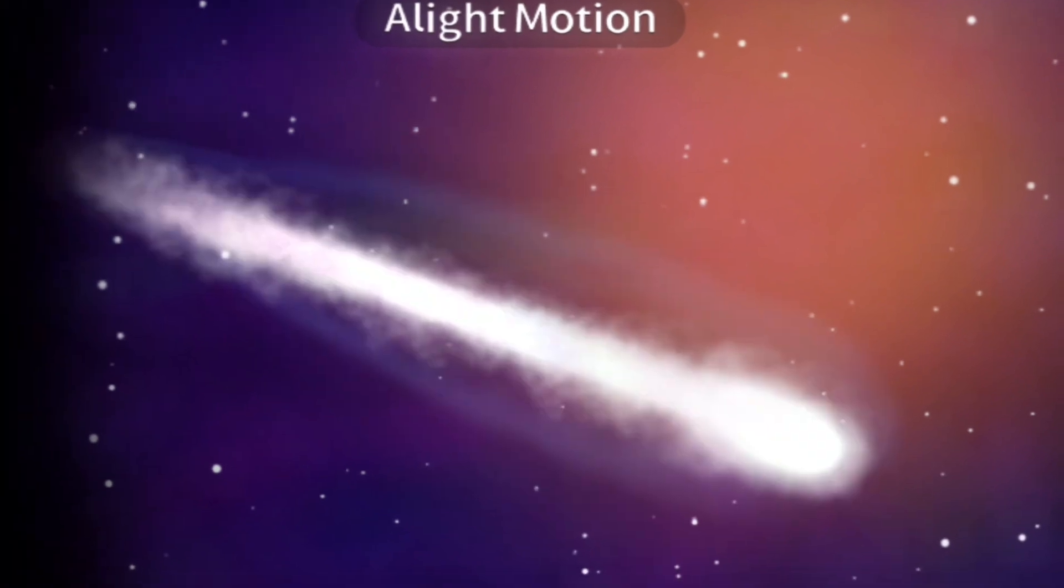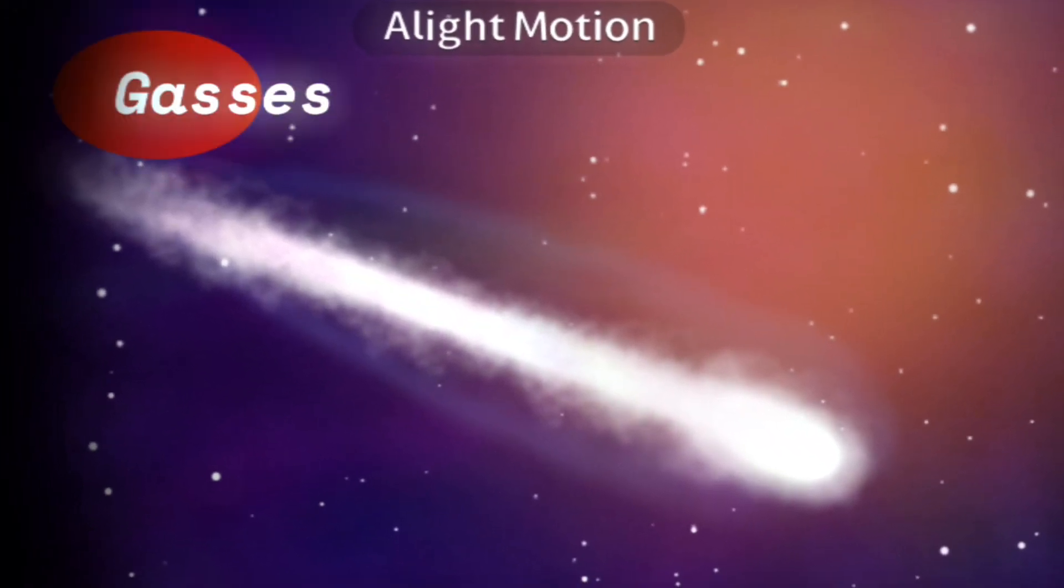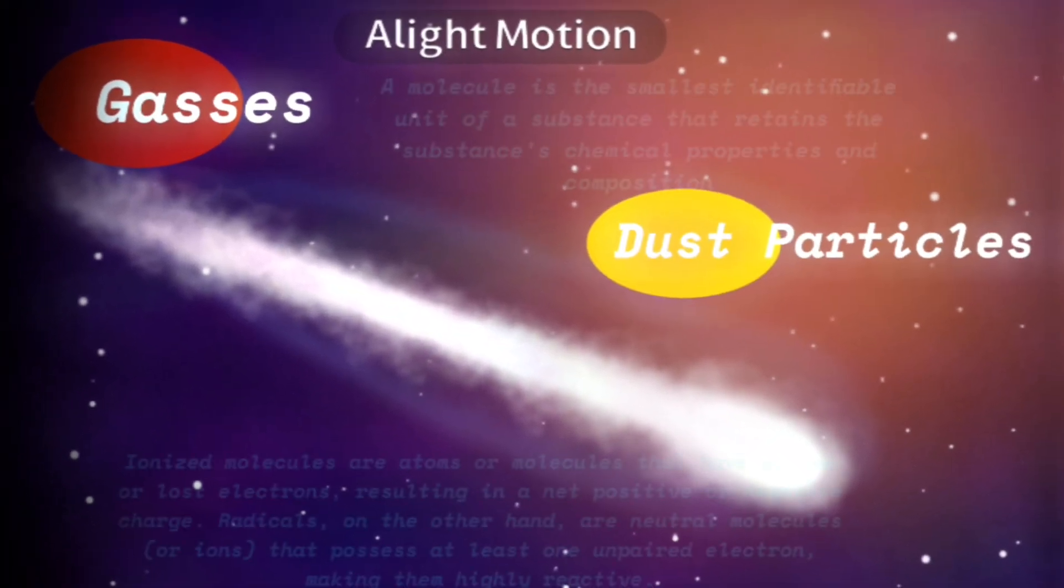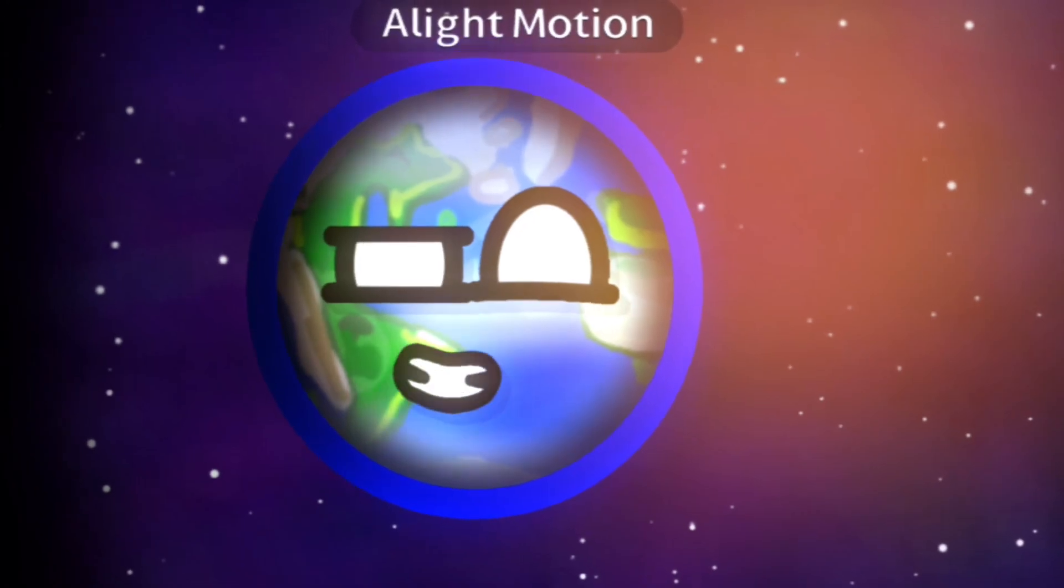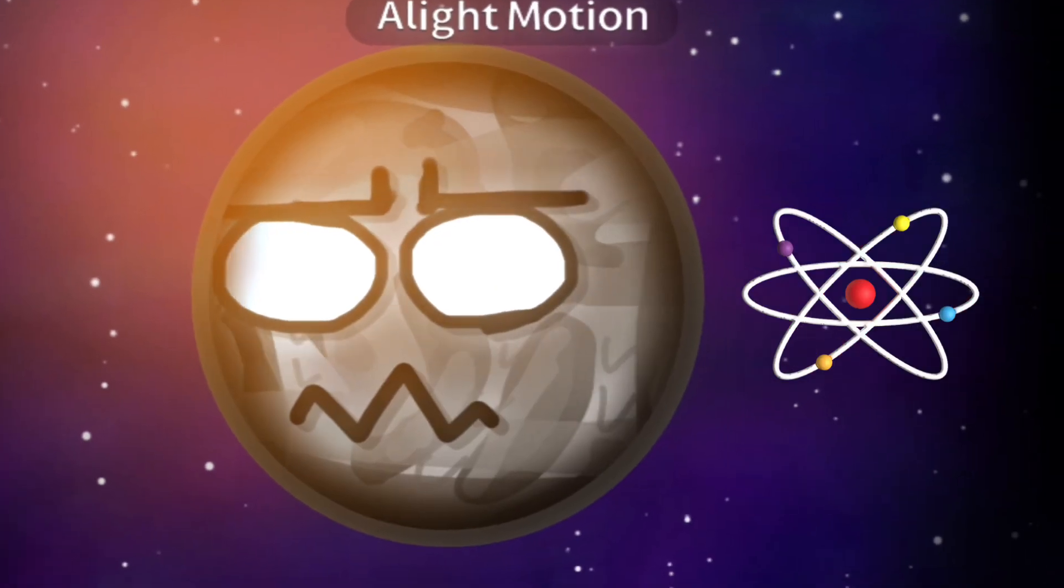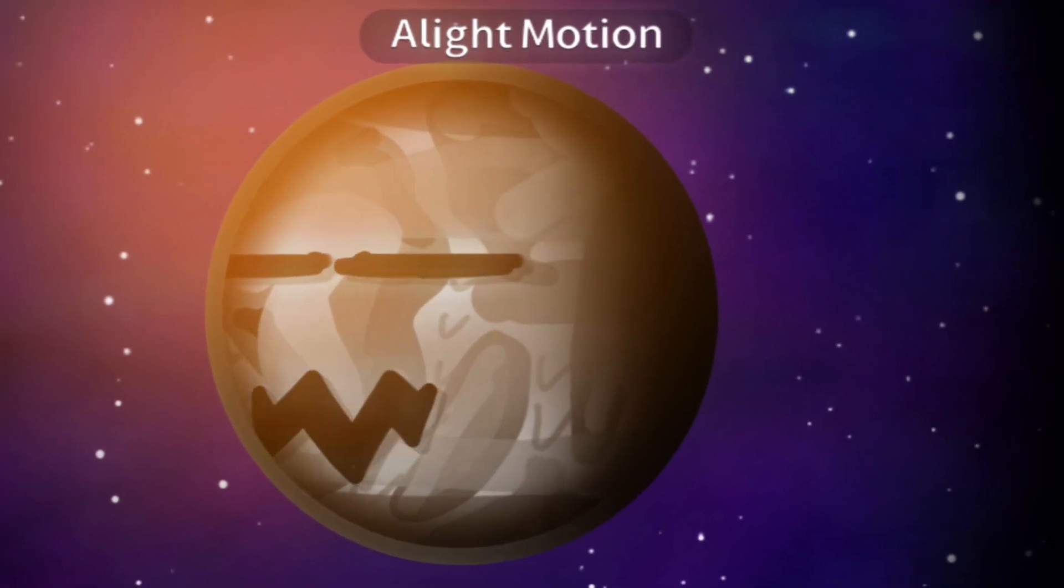The coma is primarily composed of gases, dust particles and ionized molecules and radicals. Do you know what a nucleus is? No, I don't know what that means.